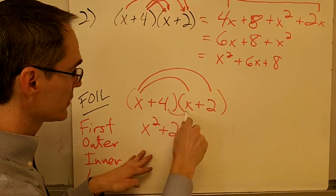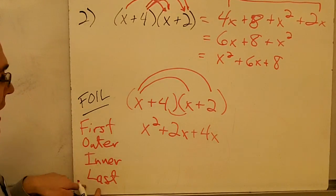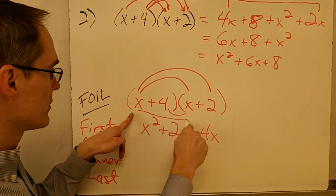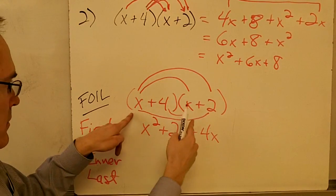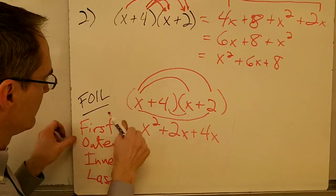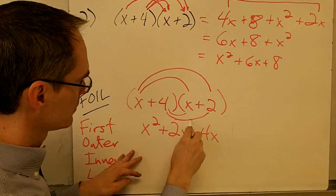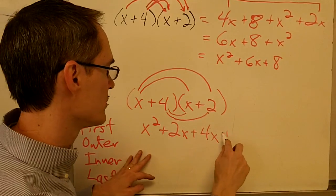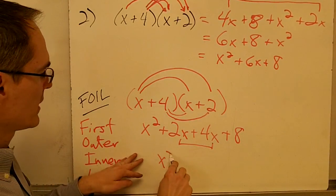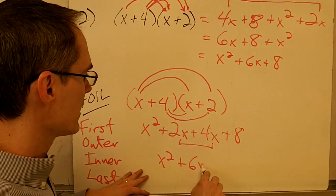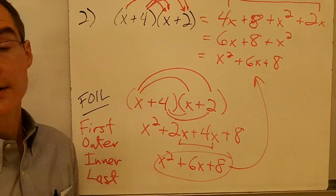Then I would do my two inner terms, positive 4 times x. That's positive 4x. And then I'd do my two last terms, which is 4 and 2. So 4 times 2 is positive 8. Again, I collect up my like terms here, and I get x squared plus 6x plus 8, which is exactly what I got before.